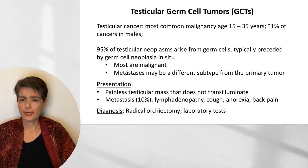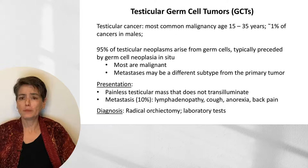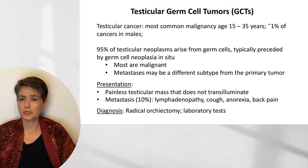Testicular cancer is the most common malignancy in males aged 15 to 35 years and accounts for about 1% of cancers in males. Almost all testicular neoplasms arise from germ cells and almost all are malignant. They are typically preceded by germ cell neoplasia in situ.